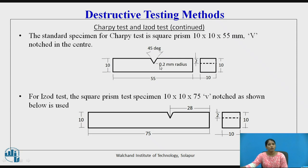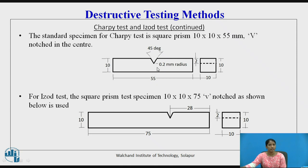For the IZOT test, the specimen is a square prism with dimensions 10 by 10 by 75 mm, with a V-notch as shown in the figure. The notch is at 28 mm from one side of the specimen, whereas in the Charpy test the notch is in the center.